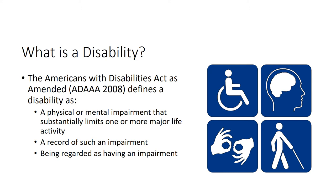The definition also includes those who have a record of, or are regarded as, an individual with a disability. Having a record of a disability means that a student may have had a disability when it is no longer present or does not limit a major life activity. Being regarded as someone with a disability means that others may assume they have a disability. Surgical scars or burns are examples of something that impacts appearance but may not limit a major life activity. Although having a record of, or being regarded as, an individual with a disability does not make a student eligible for accommodations, they are still protected from discrimination under the ADA as amended in 2008.